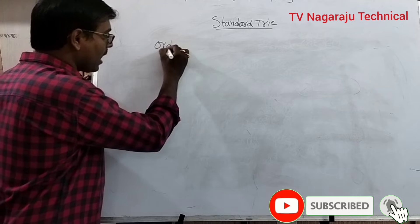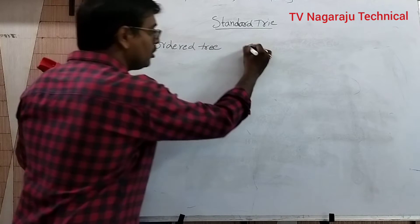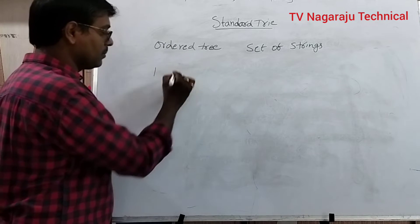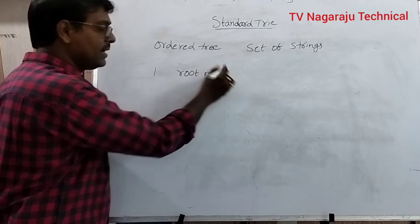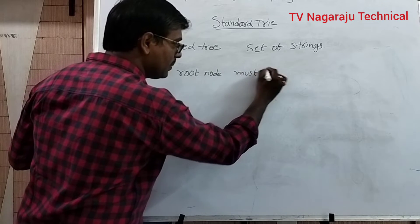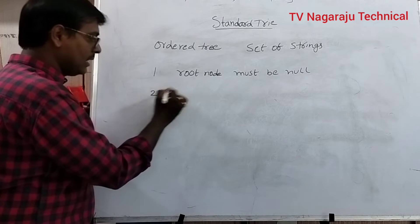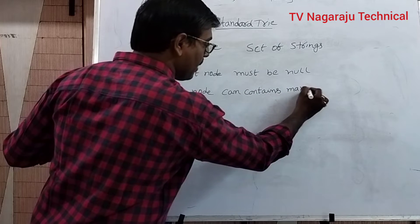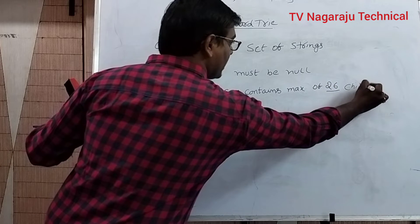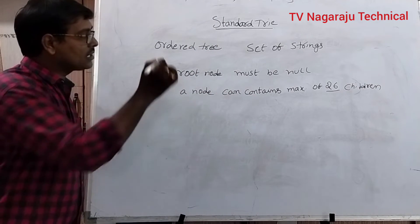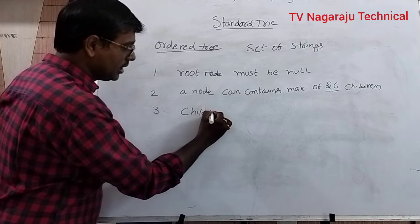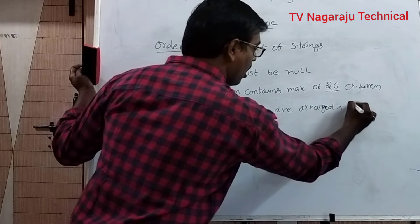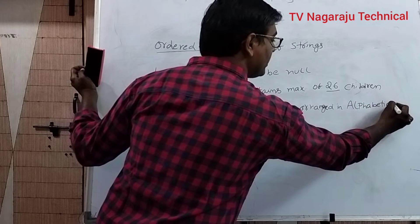A standard trie is an ordered tree used to represent a set of strings. The root node does not contain any character, so the root node must be null. A node can contain a maximum of 26 children. The standard trie is an ordered trie — that is, children of a node are arranged in alphabetical order, i.e., sorted order.